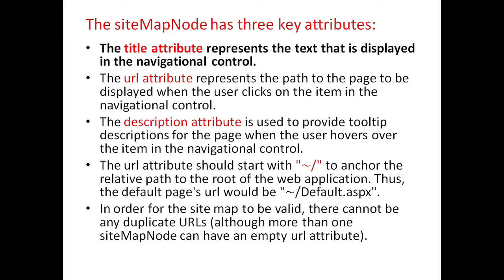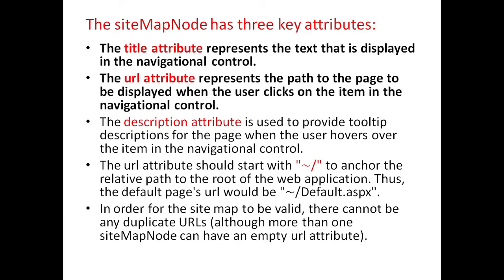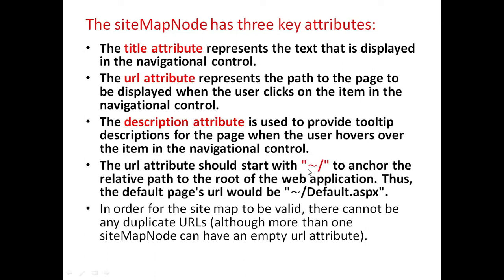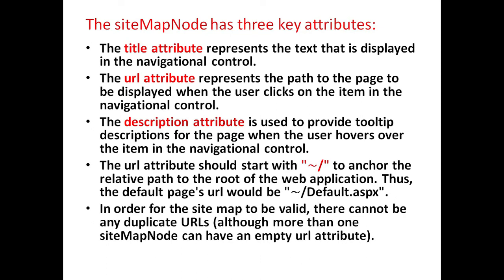The sitemap node has three key attributes. The title attribute represents the text that is displayed in the navigational control. The URL attribute represents the path to the page to be displayed when the user clicks on the item in the navigational control. The description attribute is used to provide a tooltip description for the page when the user hovers over the item. The URL attribute should start with the tilde sign (~) to anchor the relative path to the root of the web application. In order for the sitemap to be valid, there cannot be any duplicate URLs, although more than one sitemap node can have an empty URL attribute.